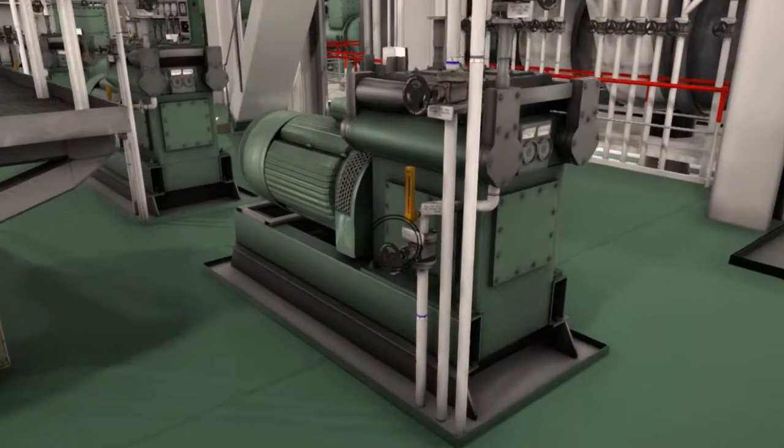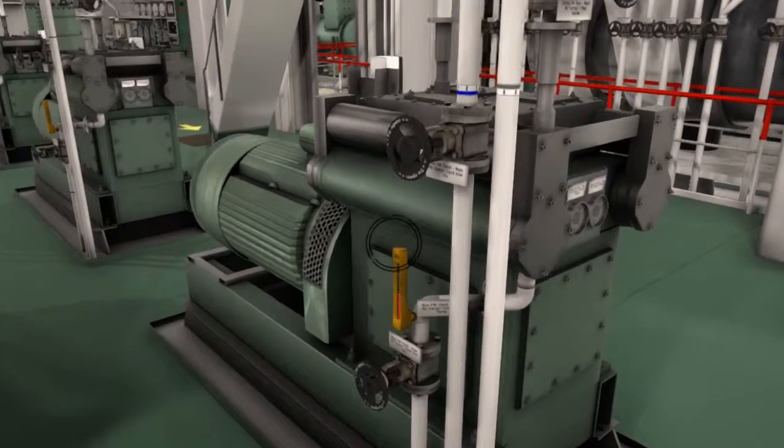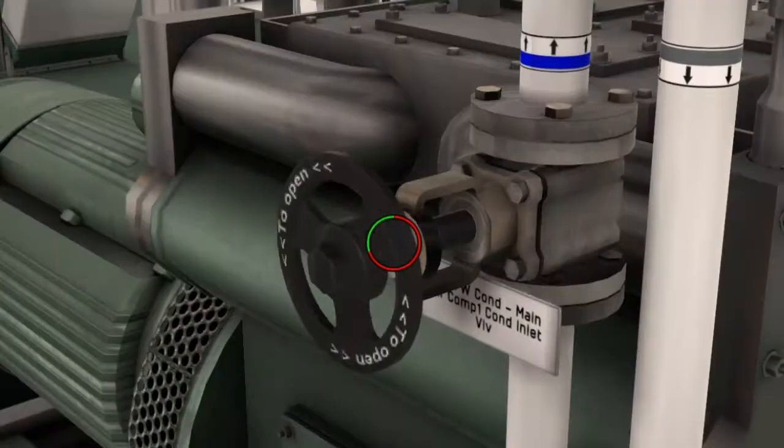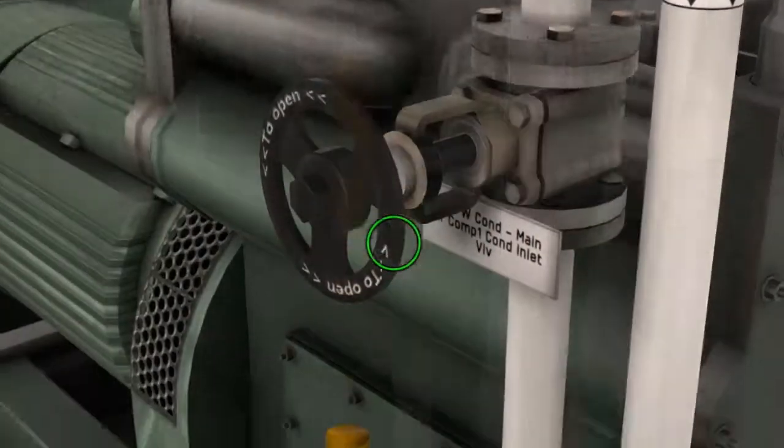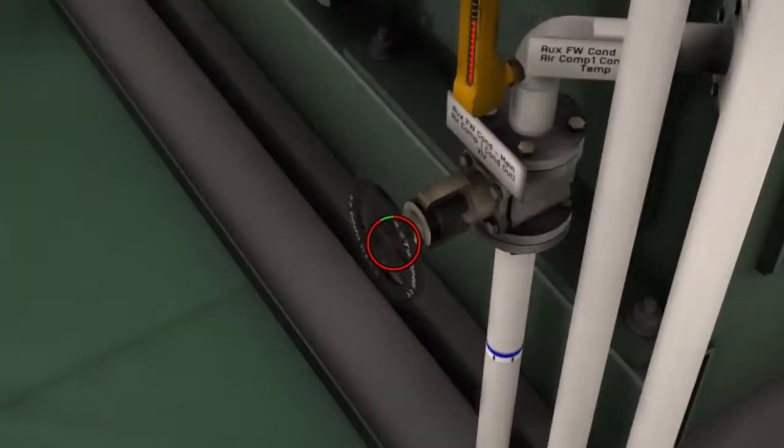Assuming that the compressor and receiver has been thoroughly secured, the first step is to open the inlet and outlet cooling water valves to ensure that sufficient cooling arrangements is carried out.